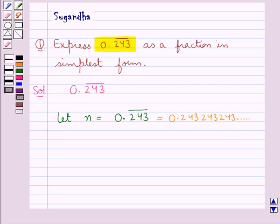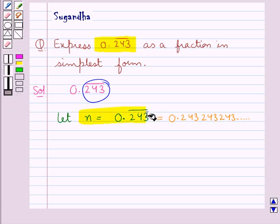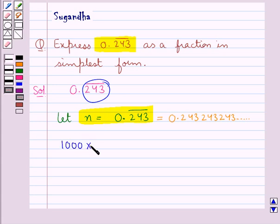Since the block of repeating digits contains 3 digits, we will multiply both sides by 10 raised to the power 3, or 1000.